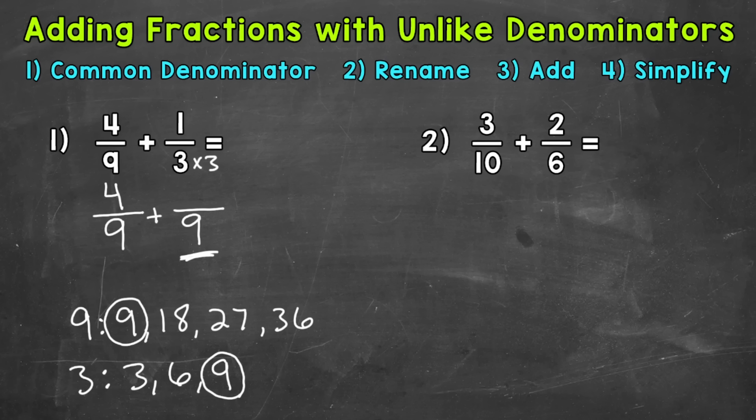Now in order to rename, we want to have an equivalent fraction. We want to keep this equivalent. We do not want to change the value of the problem at all. So whatever we do to the denominator, we have to do to the numerator. So 1 times 3 is 3. 3 ninths is equivalent to 1 third. But we have that common denominator of 9 now.